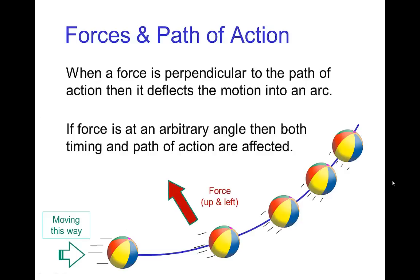It gets more complicated if the direction of motion is perpendicular or at an arbitrary angle to the direction of the force. In this more general case, we have a deflection of the path. The spacings are affected — in this case the ball is being acted on by a force that is up and to the left, so it slows in its motion from left to right and speeds up in its motion from bottom to top. This is fairly intuitive if you think about a force pulling an object in that direction when the object is already moving in another direction.